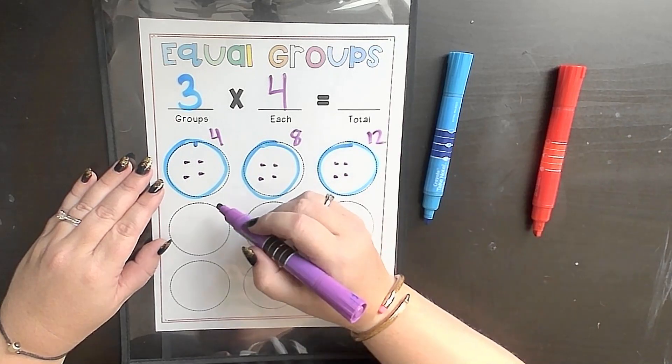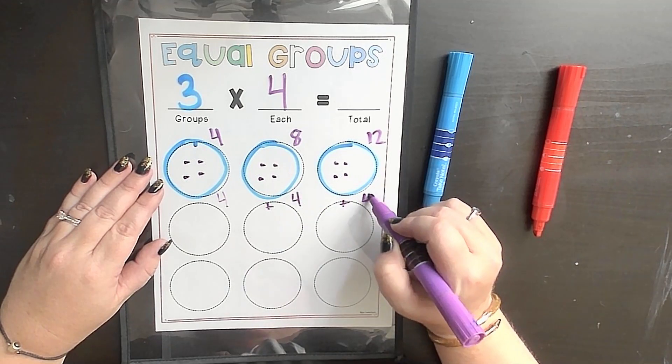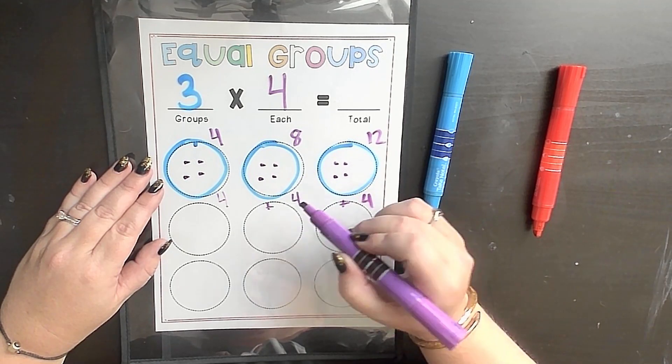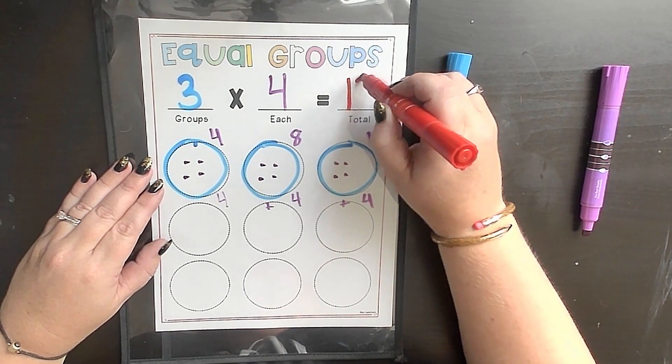Or one of my favorites, of course, repeated addition. 4 plus 4 plus 4. No matter which strategy I use that is best for my brain, I will still come out with my correct total or my final product, which is 12.